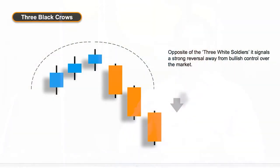The opposite of the three white soldiers is the three black crows. These act in exactly the same way but in reverse. We've seen an uptrend where momentum is slowing — smaller body candles and indecision — and then we get three big downward candles in a row. That suggests the upward movement is gone, the sellers have come back into the market, and we're looking at a potentially longer-term downtrend. It's a great opportunity to potentially place a sell trade.